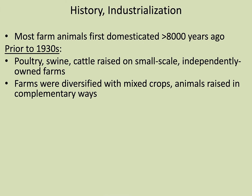Just touching a little on the history — most farm animals were first domesticated a little more than 8,000 years ago. It's been a slow evolution since then. Prior to the 1930s especially, poultry, swine, and cattle were all raised on small-scale, independently owned farms. A lot of times one farm would grow any or all of those species, and farms were more diversified with mixed crops and animals.